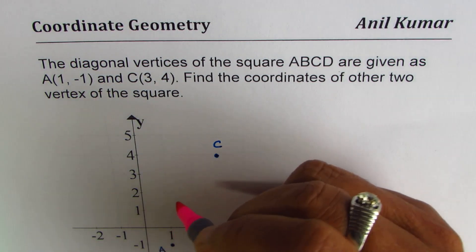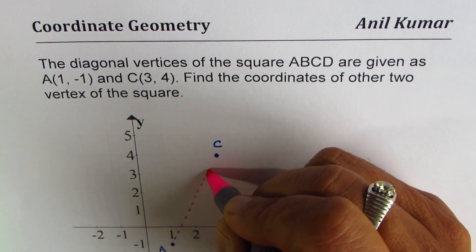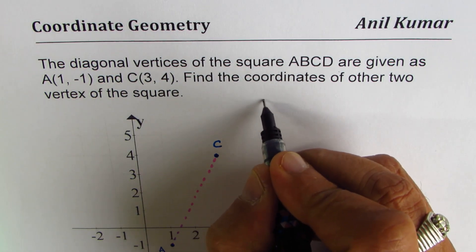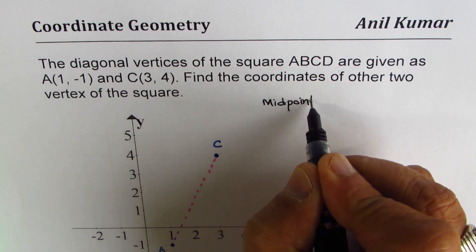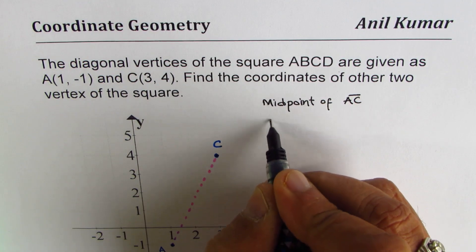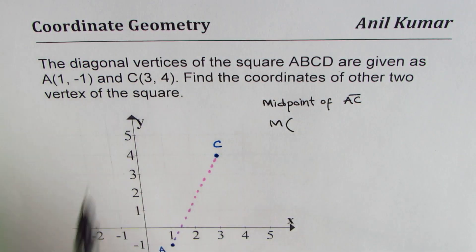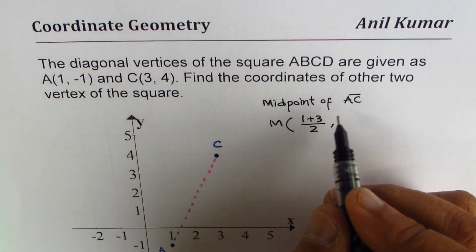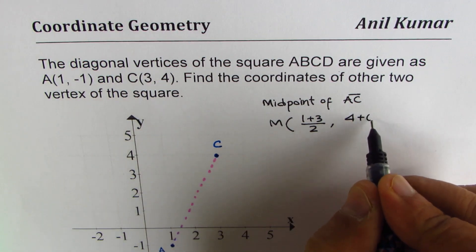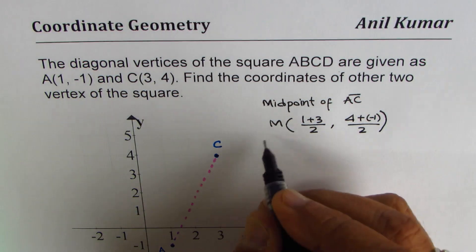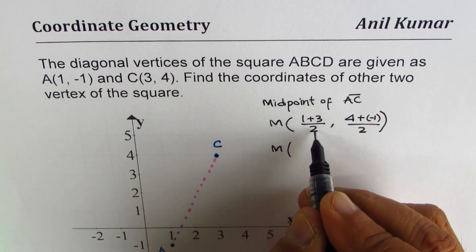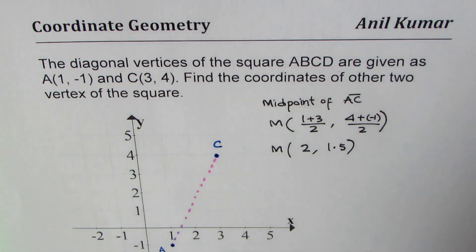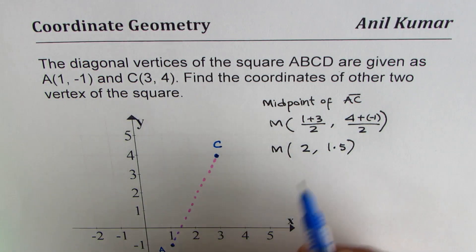The first step is to find the midpoint of this diagonal which connects the opposite ends. The midpoint is the center value — let's call it M. Midpoint of AC: we take the average of the x-values, so 1 plus 3 divided by 2, and the average of the y-values, which is 4 plus (-1) divided by 2. That gives us 4 divided by 2 equals 2, and 3 divided by 2 equals 1.5.